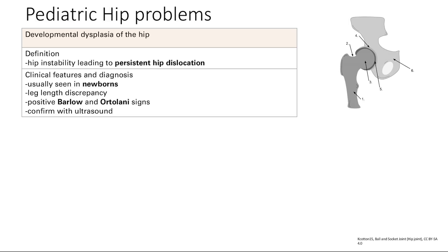First is developmental dysplasia of the hip. Let's talk about the definition: it's hip instability leading to persistent hip dislocation. This is usually seen in newborns — that's why I want to highlight 'developmental.' So it's in newborns, and they get persistent hip dislocation due to hip instability.